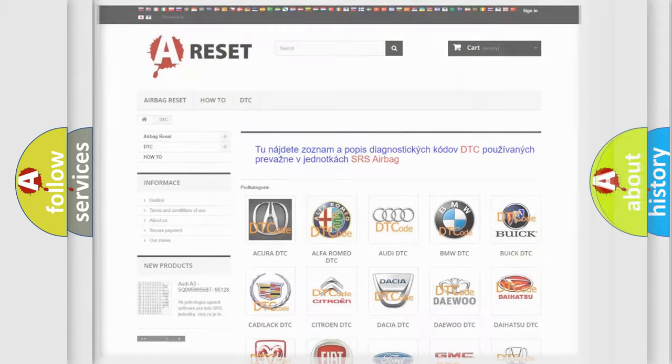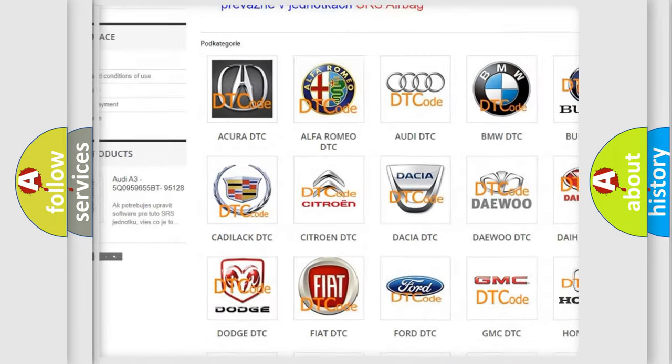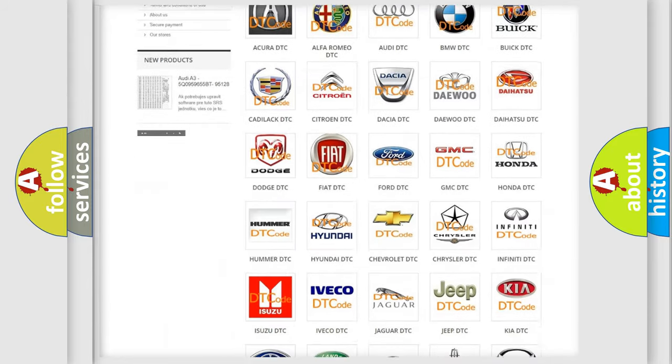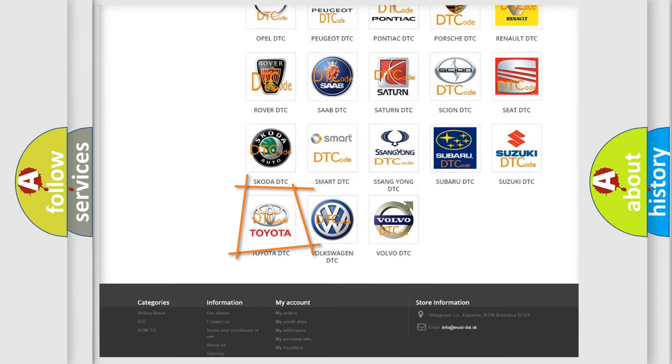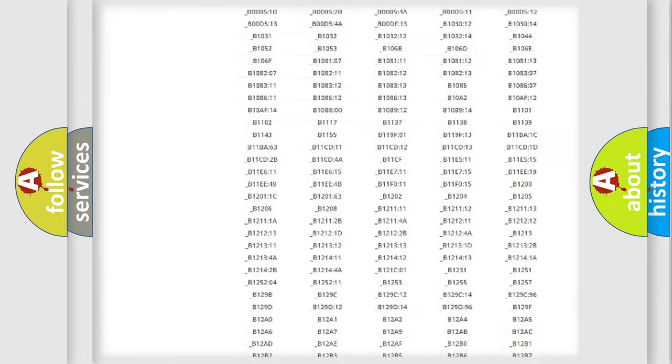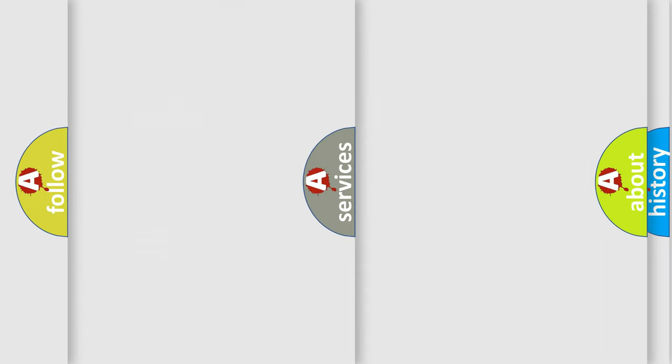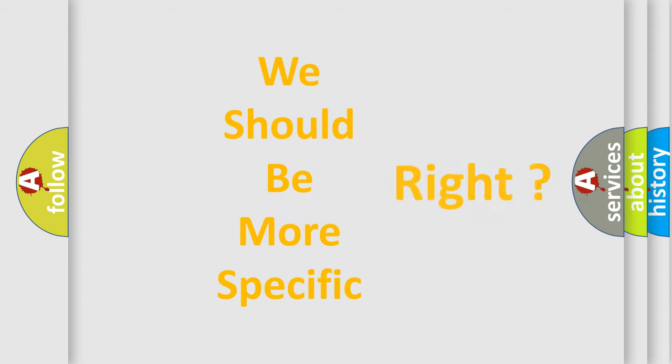Our website airbagreset.sk produces useful videos for you. You do not have to go through the OBD2 protocol anymore to know how to troubleshoot any car breakdown. You will find all the diagnostic codes that can be diagnosed in Toyota vehicles, and many other useful things. The following demonstration will help you look into the world of software for car control units.